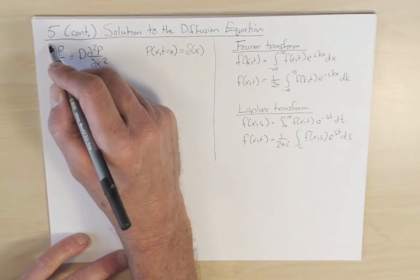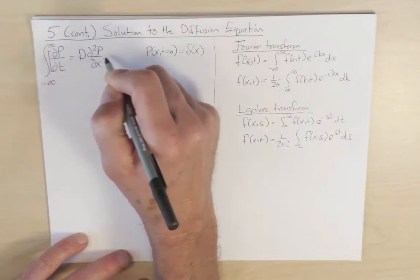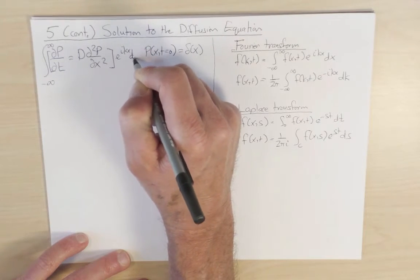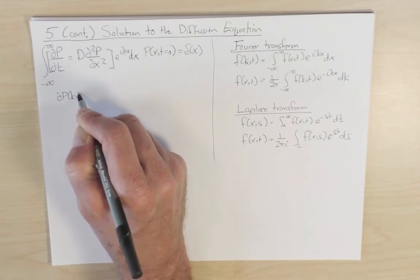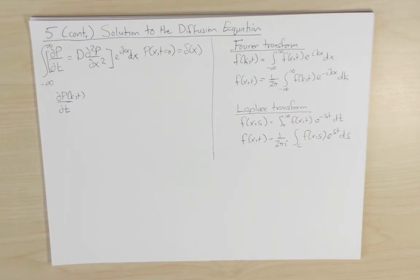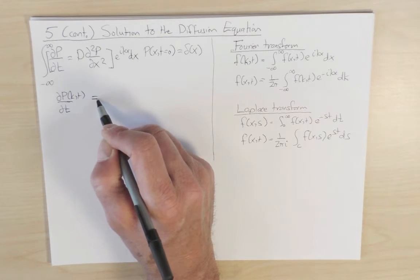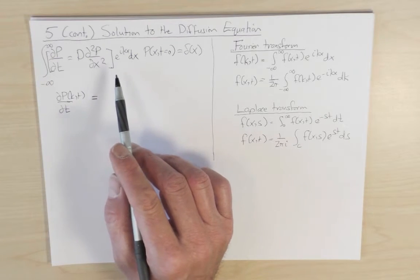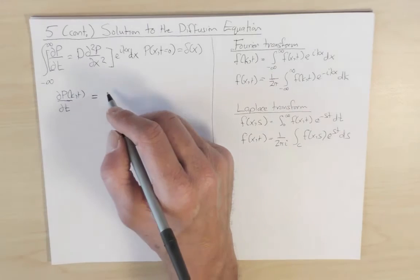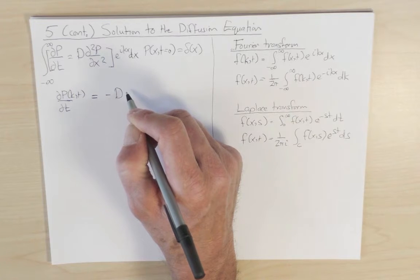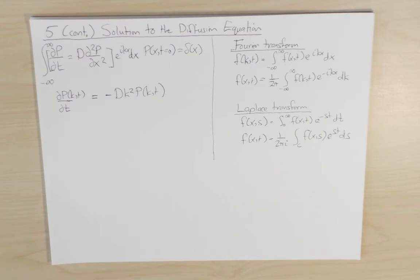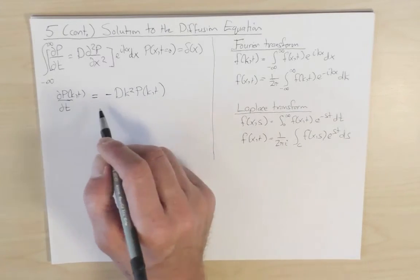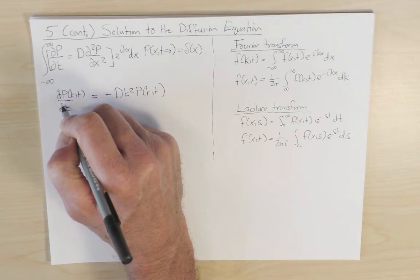Let's take our original equation and integrate from minus infinity to infinity, multiplying by e to the ikx dx — that is, taking the Fourier transform of both sides. On the left-hand side we get dp(k,t)/dt. On the right-hand side, an important feature of the Fourier transform is that spatial differentiation turns into multiplication by ik, so the second derivative brings a factor of minus k squared. We get minus D k squared p(k,t). This first step has transformed a PDE into an ordinary differential equation, with only one variable being differentiated.